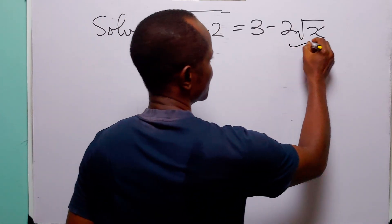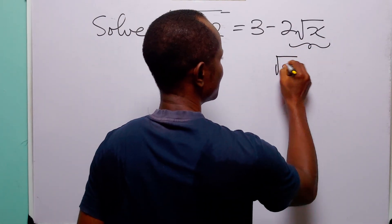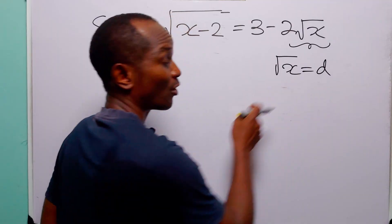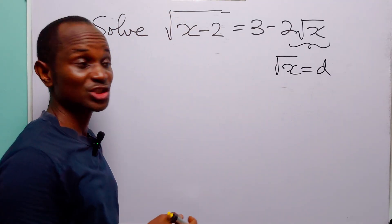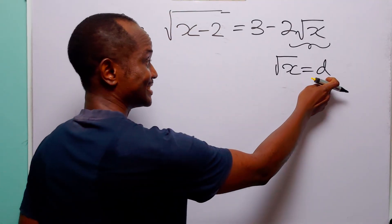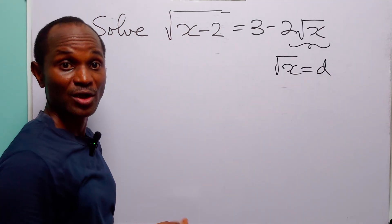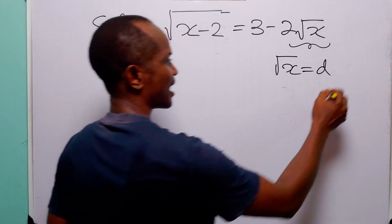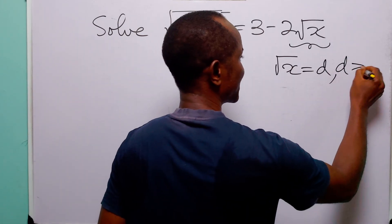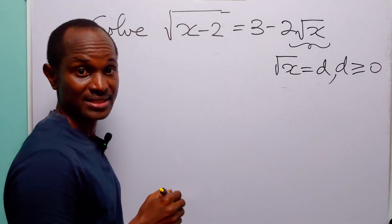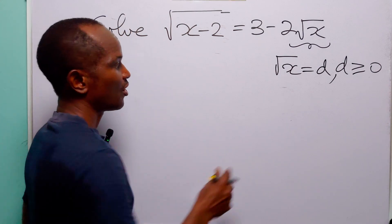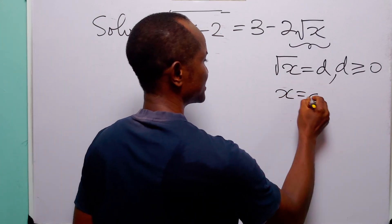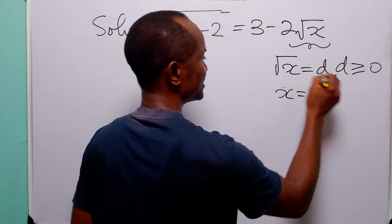Let us call this quantity — that is the square root of x — d. You know that this comes with the condition that d must be positive because the square root must be positive. So we have that d must be greater than or equal to zero. When we square both sides of this equation, we have that x is equal to d squared.